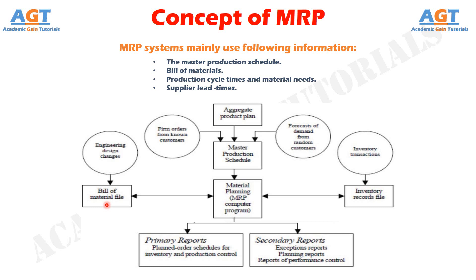Material requirements planning was pioneered in the 1970s with the work of Orlicky. It later evolved and became part of integrated manufacturing resource planning systems, or MRP2. MRP2 is a computer-based planning and scheduling system designed to improve management's control of manufacturing and its support functions.